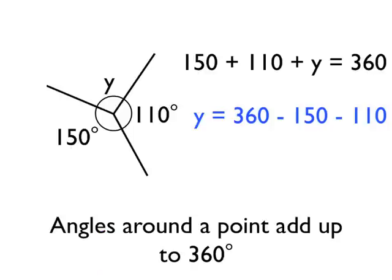So angle Y is 360 take away 150 take away 110, which leaves us with 100 degrees. Angle Y is 100 degrees, and we've used our angle fact to calculate that.